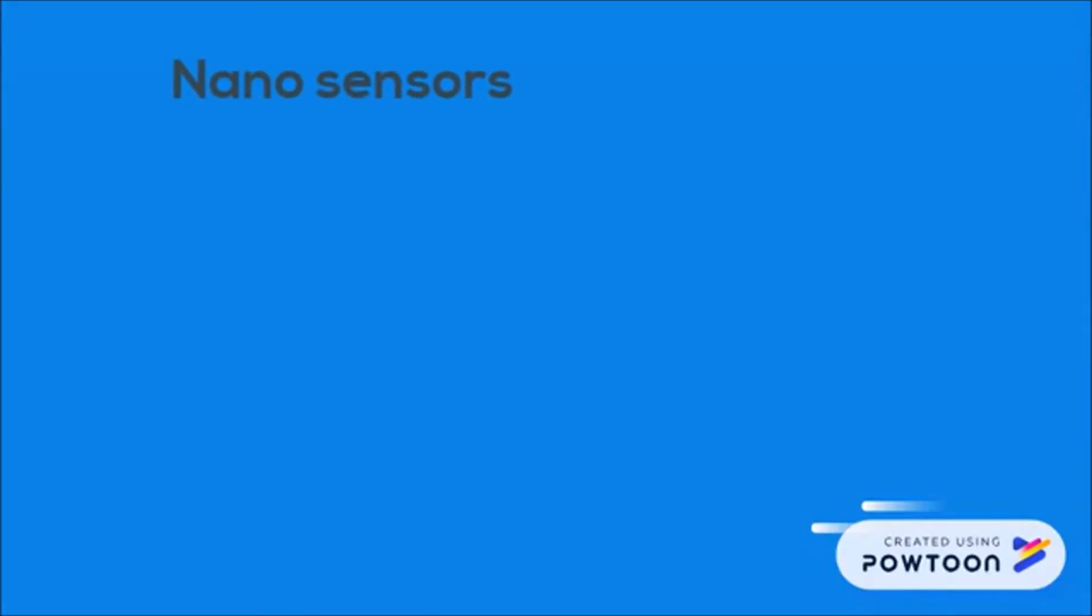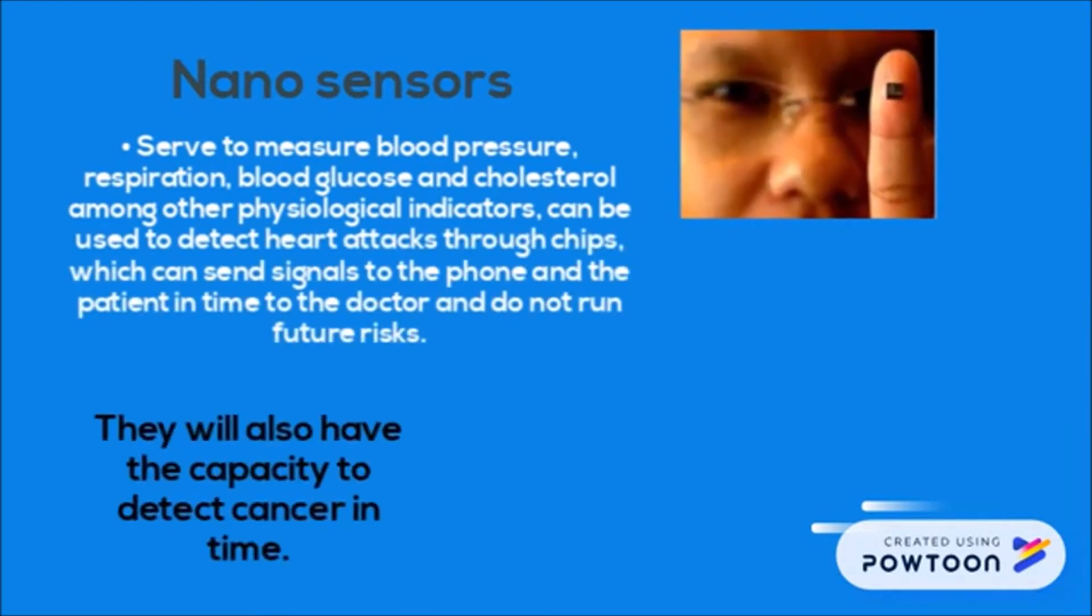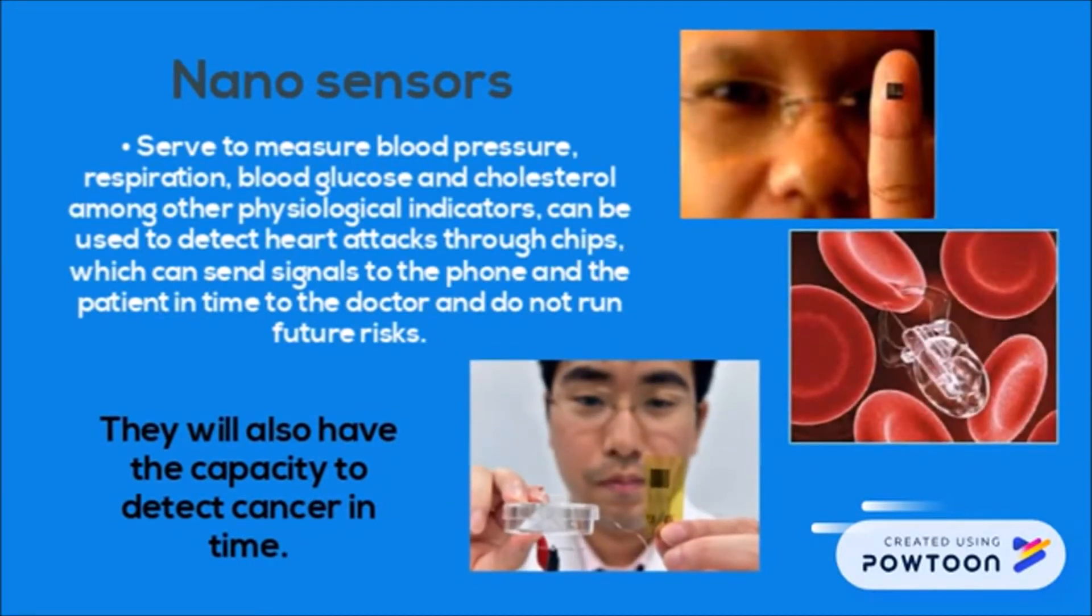Nanosensors serve to measure blood pressure, respiration, blood glucose, and cholesterol among other physiological indicators. They can be used to detect heart attacks through chips and will also have the capacity to detect cancer in time.